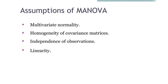The assumptions of MANOVA are: multivariate normality, homogeneity of covariance matrices, independence of observations — observations should be independent — and linearity. Linearity means a linear correlation, so a linear relationship will exist between the matrices.